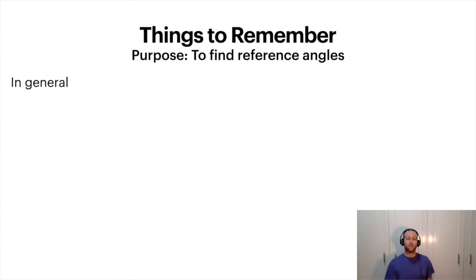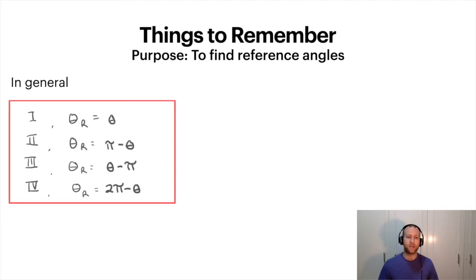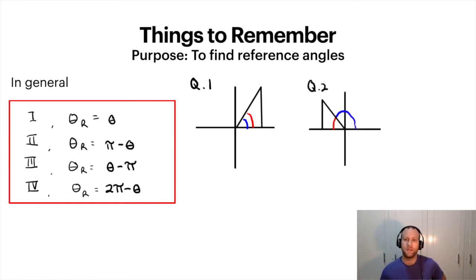So things to remember for reference angles in general: you've got this. So given whichever quadrant you are in, you have different equations. So in quadrant one, your reference angle is equal to the angle in standard position. Quadrant two: π minus standard angle, and so on and so forth. And here are some graphs here to just kind of show this, the blue line being the standard angle and the red being the reference angle.